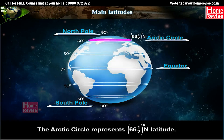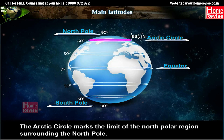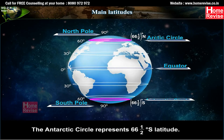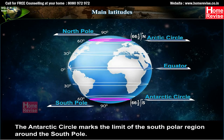The Arctic Circle represents 66.5 degrees north latitude and marks the limit of the north polar region surrounding the North Pole. The Antarctic Circle represents 66.5 degrees south latitude and marks the limit of the south polar region around the South Pole.